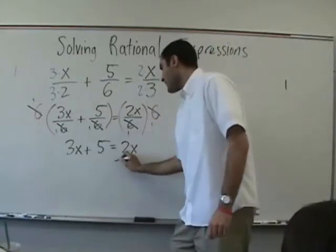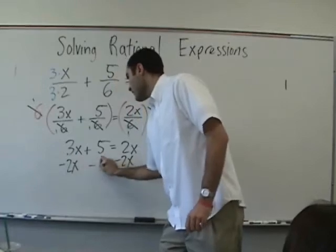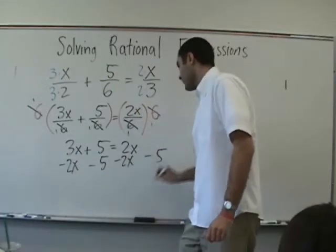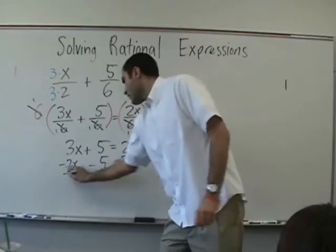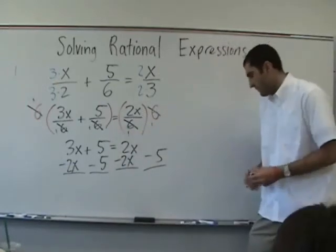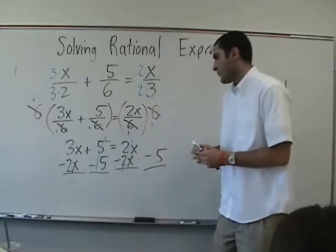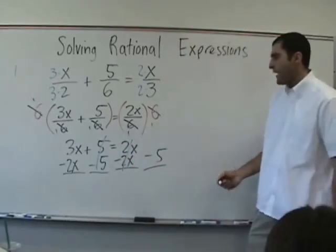So there's many ways we can do this. It's plus 5. Minus 5. Minus 5. 3x minus 2x equals negative 5. 3x minus 2x equals negative 5. x equals negative 5.